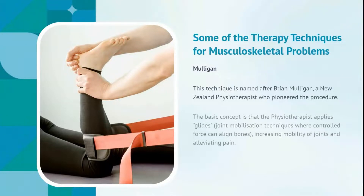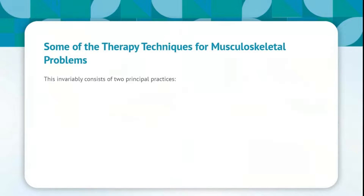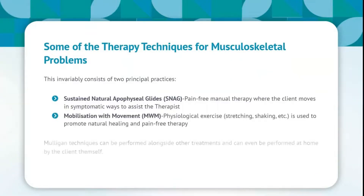The Mulligan technique is named after Brian Mulligan, a New Zealand physiotherapist who pioneered the procedure. The basic concept is that the physiotherapist applies glides — joint mobilization techniques where controlled force can align bones — increasing mobility of joints and alleviating pain. This consists of two principal practices: sustained natural apophysial glides, SNAG, a pain-free manual therapy where the client moves in symptomatic ways to assist the therapist; and mobilization with movement, MWM, where physiological exercise, stretching, and shaking are used to promote natural healing and pain-free therapy. Mulligan techniques can be performed alongside other treatments and can even be performed at home by the client.